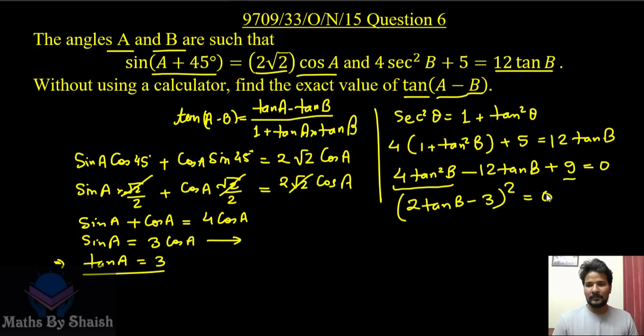Otherwise also we can do the splitting middle term that would also give us the same value. But that is fine because you can see it is easier because it is 4, which is 2², and tan²B, and it is 3². So it can be directly seen as (2 tan B - 3)² - sorry, it is plus 3².